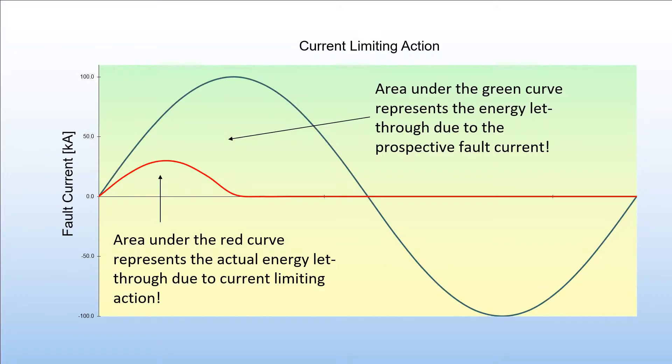Here we can see what current limiting is all about. The green curve is the prospective fault current—in other words, the fault current that would have flowed had there been no current limiting action. The red curve is the actual fault current, and you can see that the peak of the actual fault current is way less than that of the prospective peak due to the current limiting action. Also, the area under the red curve, which is the let-through energy, is way less than the area under the green curve—this is the energy that would have been let through had there been no current limiting.